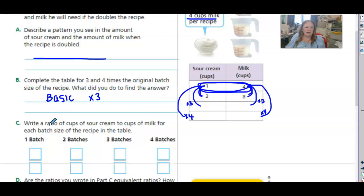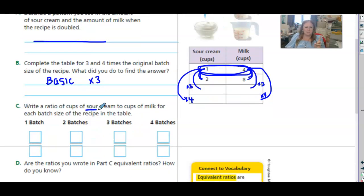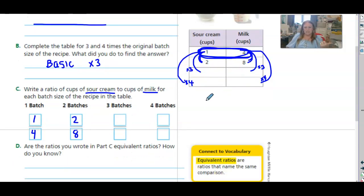So part C asks us to write a ratio of cups of sour cream to cups of milk. So sour cream first, milk second every time. It's really important to read our question. So we're just taking these and writing them as fraction ratios. So one batch is one to four. Two batches, we need two to eight. So go ahead and finish those here using your table.